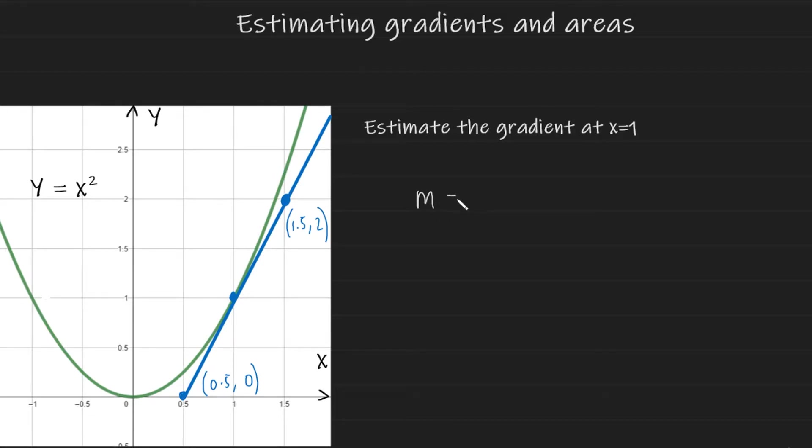So we know that the gradient of a line is equal to y2 minus y1 over x2 minus x1. And in this case, I'm going to choose this upper value here to be my y2. So it's going to be 2 minus 0. This is going to be y1. So 2 minus 0 over, and now if this was my y2, this has to be my x2. So 1.5 minus 0.5, which is my x1. And if we simplify, we end up with 2 over 1, which is just a gradient of 2. So we have now estimated the gradient to this graph at x equals one using a tangent and we found it to be 2. And that's how that is done.